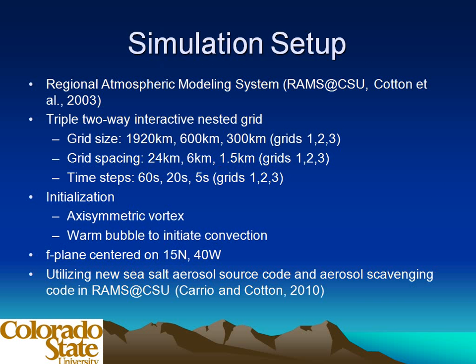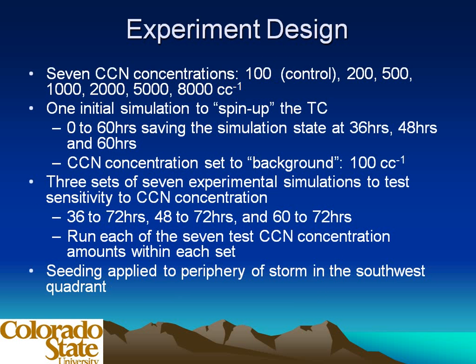We use the RAM system at CSU to do these simulations, using a triple two-way interacted nested grid. One thing to note is that the grid resolution on the fine grid is 1.5 kilometers. We initialize it with an axisymmetric vortex and a small warm bubble to kick the convection going. We also used an F-plane centered on 15 north, 40 west so that the storm would remain inside the grid, simplifying the simulation. We're also incorporating new sea salt aerosol source code and aerosol scavenging code developed by Gustavo Cario.